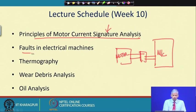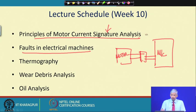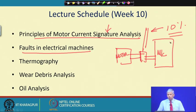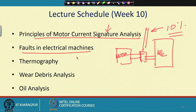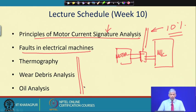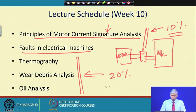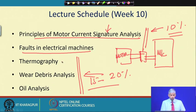We will also talk about different faults in electrical machines — motors, transformers and so on. Today about 10 percent of industry uses MCSA, which was almost insignificant a couple of decades ago. Other techniques like thermography, wear debris analysis, and oil analysis will also be covered, constituting the remaining 15 to 20 percent of CBM techniques used through thermal imaging.